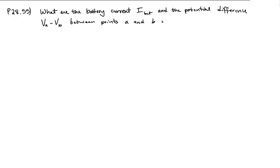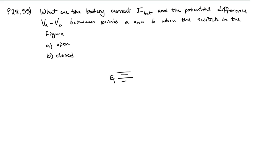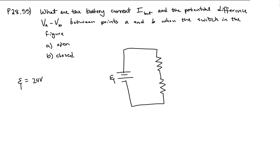What are the battery current and the potential difference VA minus VB between points A and B when the switch is open and then when it's closed? The circuit has a battery at 24 volts EMF connected to two branches of resistors. The first branch has two resistors, and the second branch also has two resistors.